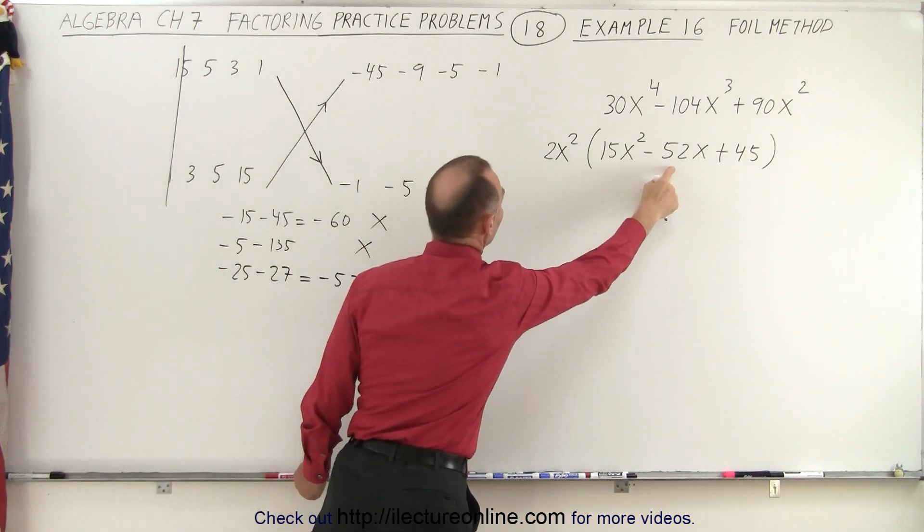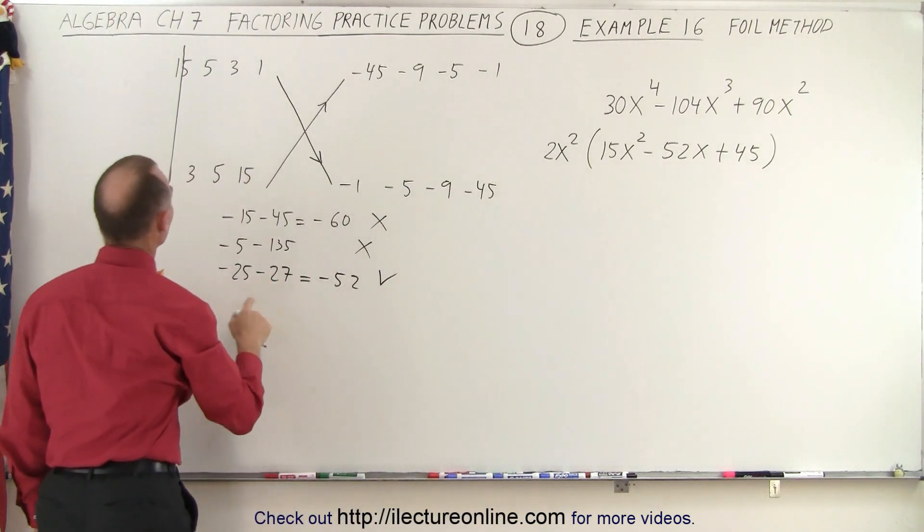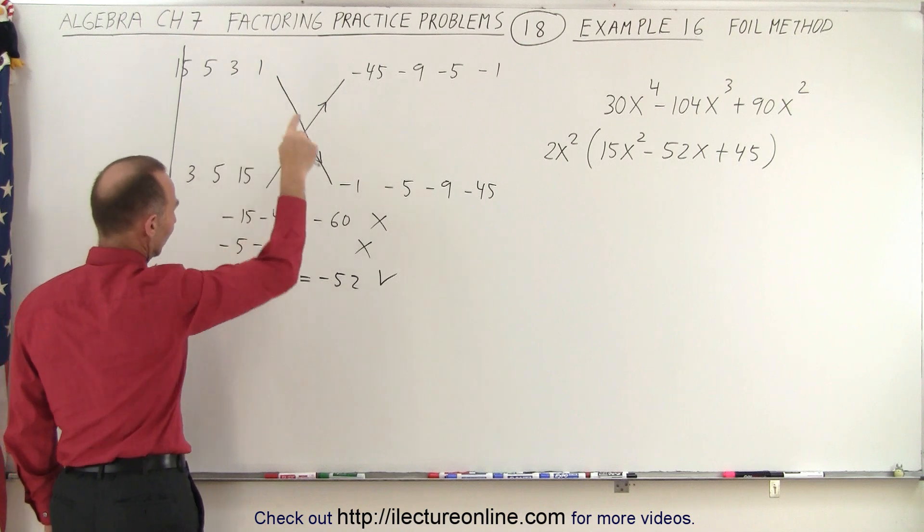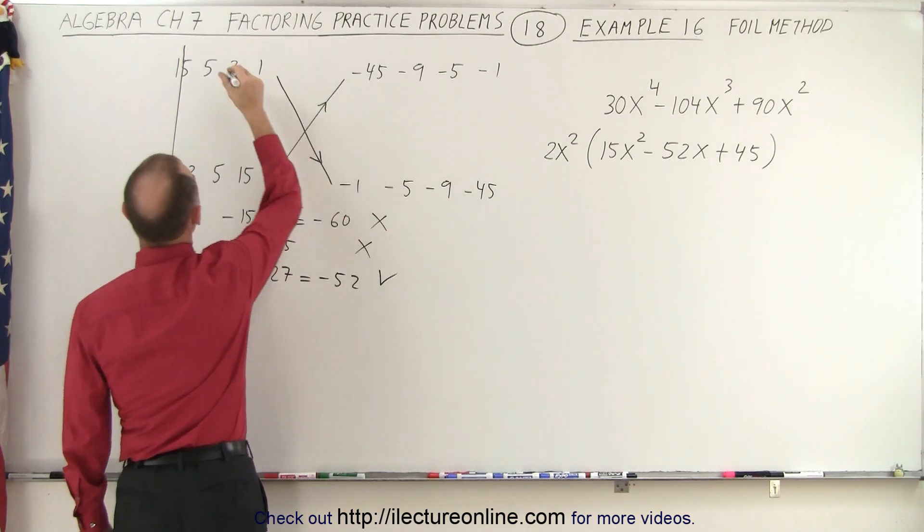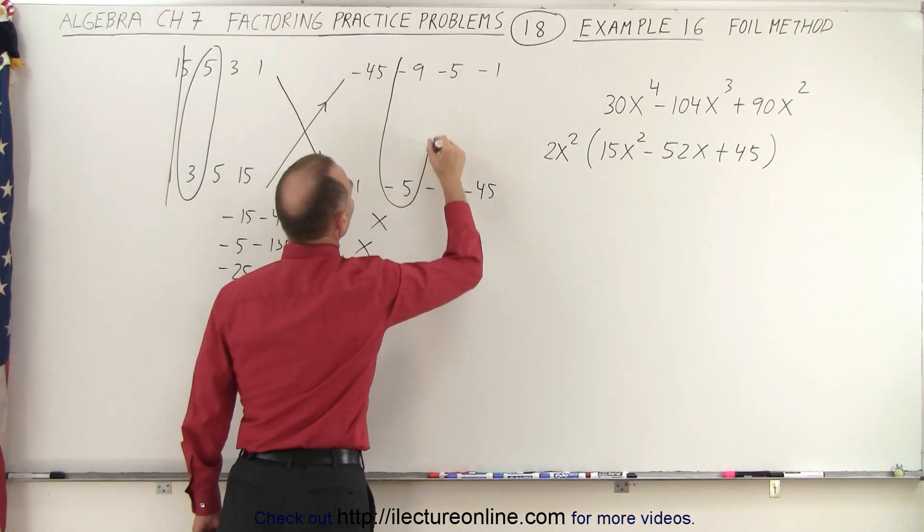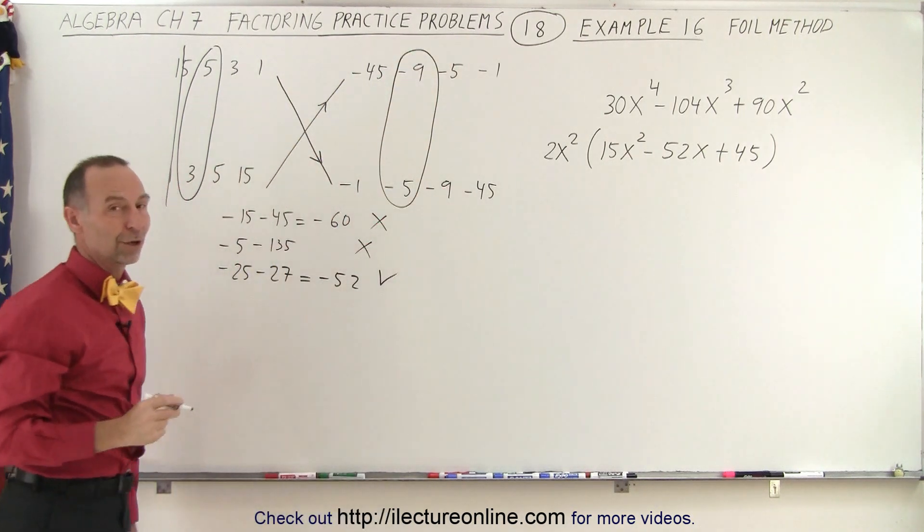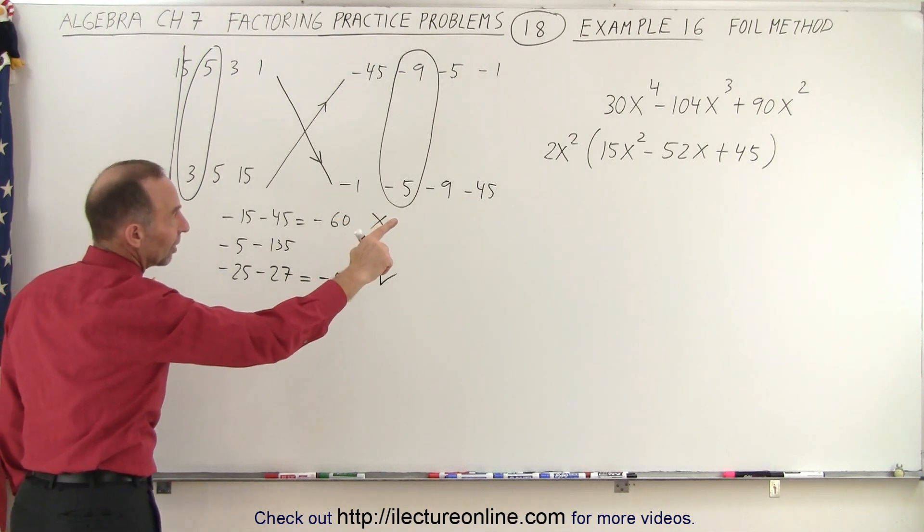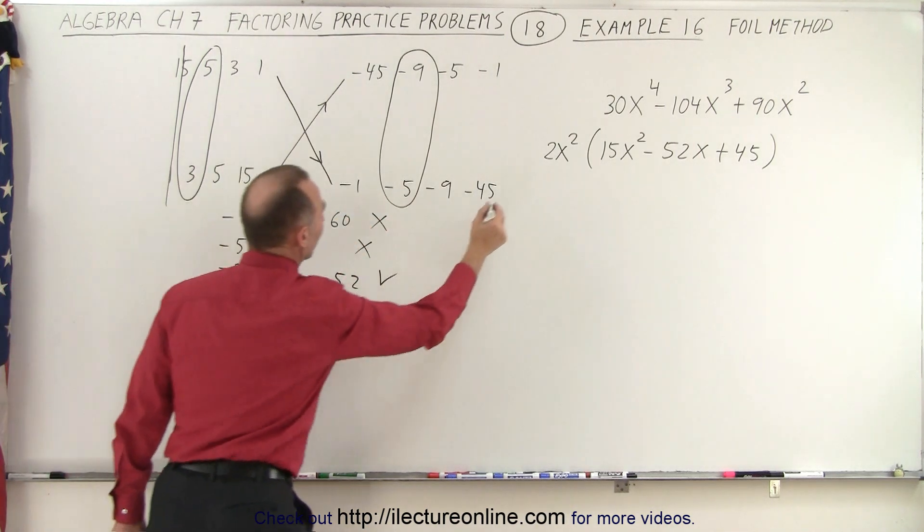I was looking for the minus 52. So again, what did I do? It was 5 times negative 5, and 3 times negative 9. So this combination with this combination of numbers gave me the correct middle term, which means that what's in parentheses, well, I can already write this down as well.